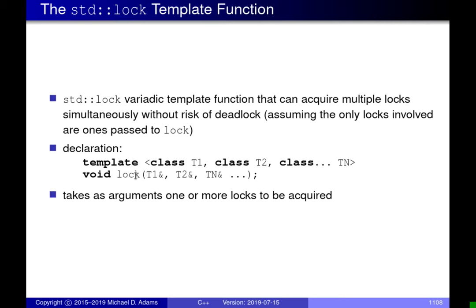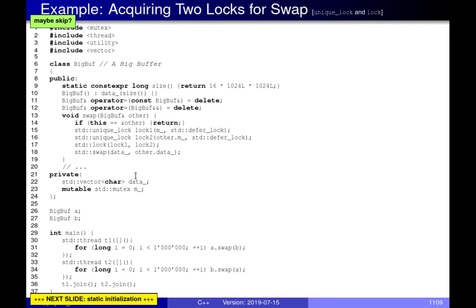This is similar functionality to scope_lock, where you can provide multiple locks and it applies a deadlock avoidance algorithm on construction. The difference is this std::lock function is what you'd apply after the lock has been constructed and you want to lock multiple mutexes. There's a code example illustrating how to use this lock function using unique_lock with deferred locking, then calling std::lock to acquire both mutexes simultaneously. You probably wouldn't write code this way — it's just illustrative, since scope_lock is simpler.